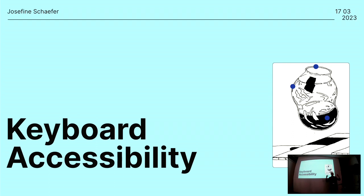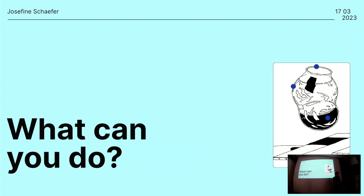That was color contrast really quickly — each of these topics we could go much further into depth. So if you have any questions, feel free to hit me up afterwards. Let's dive into the next topic: keyboard accessibility. What we want to make sure is that we can tab through all the things and that we can also tab away. We don't want to trap our users unless it's a very specific use case like a modal or a login.